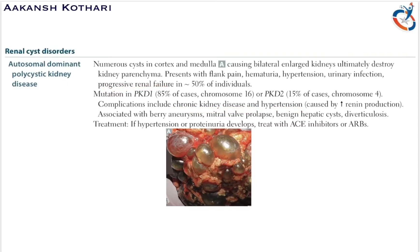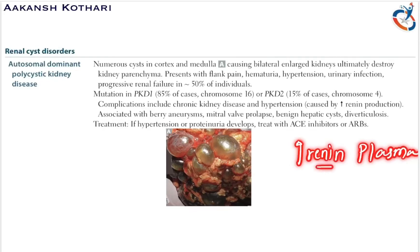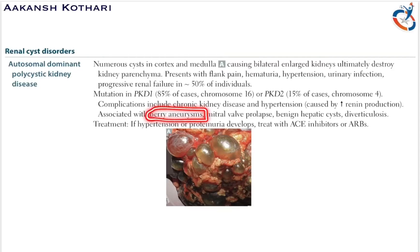This hypertension is caused majorly due to increased renin production; hence in serum analysis we get increased renin in the plasma. It is also associated with berry aneurysms, mitral valve prolapse, and benign hepatic cysts. The berry aneurysm can lead to subarachnoid hemorrhage; mitral valve prolapse is a heart disorder related to autosomal dominant polycystic kidney disease.